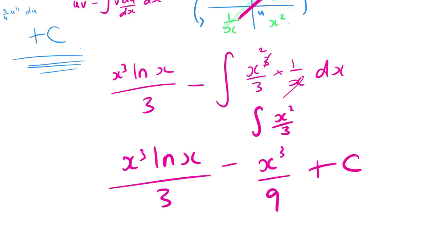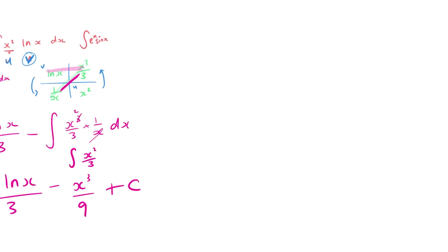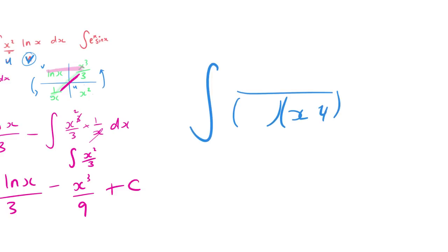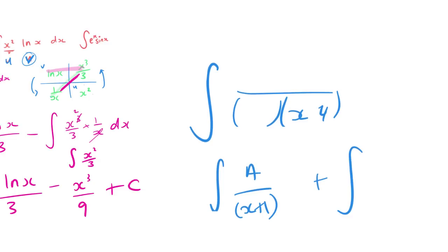With integration, sometimes they give you partial fractions — make sure you put it as partial fractions first and then integrate separately, because you'll have the integral of a/(something) plus the integral of b/(something). Normally you get a ln result.